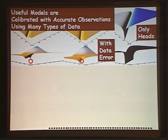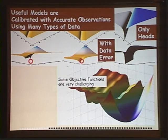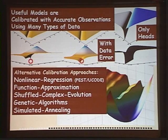Sometimes our objective function surface is very complex and it's challenging to find the minimum. There are other methods besides nonlinear regression that we might use, like function approximation, shuffle complex evolution, genetic algorithms, simulated annealing. Some software I'll talk about at the end is oriented towards getting these methods into practitioners' hands.